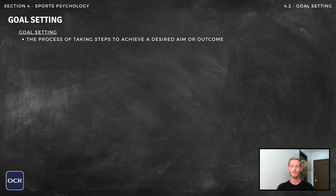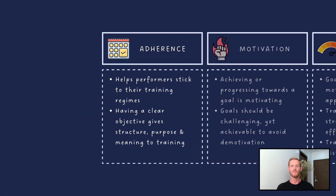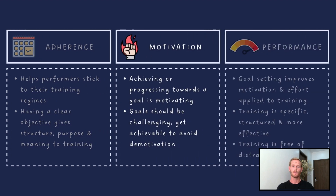A goal is a desired aim or outcome, and goal setting is the process of taking steps to achieve this aim. There are a number of reasons for goal setting, including to help performers adhere to their regimes, to motivate, and to improve or optimise performance. Goal setting has been shown as an effective method of ensuring individuals stick to their programs, as a clear objective provides structure and gives purpose and meaning to training. Fulfilling a goal or experiencing progression towards one also helps to motivate, which in turn increases the likelihood of long-term adherence to a regime.